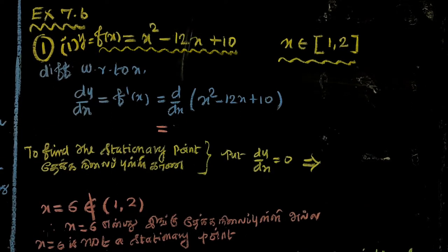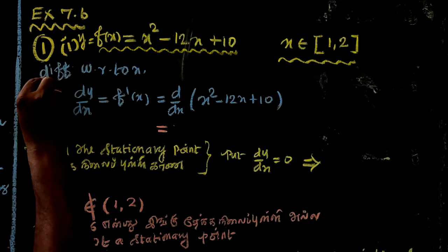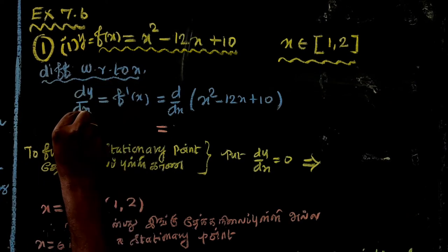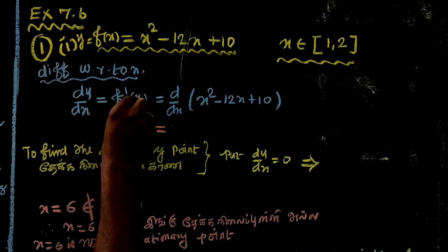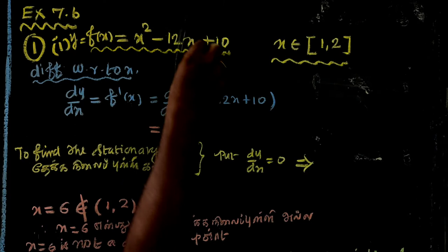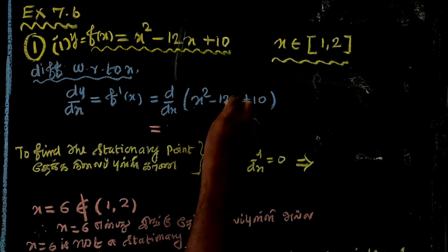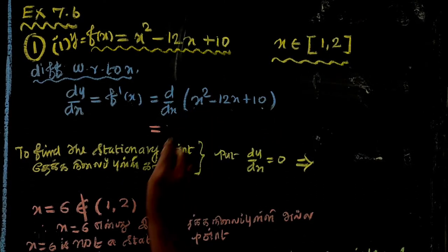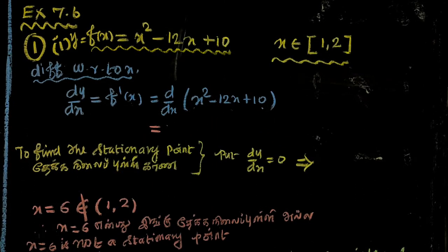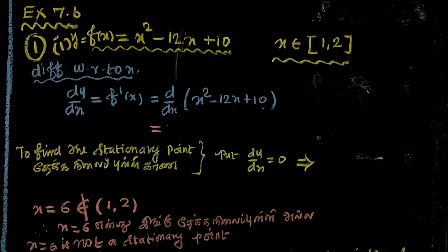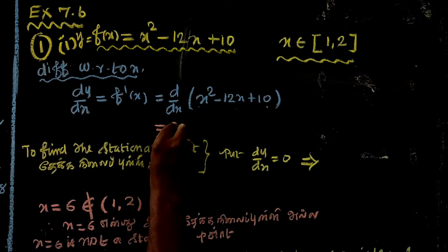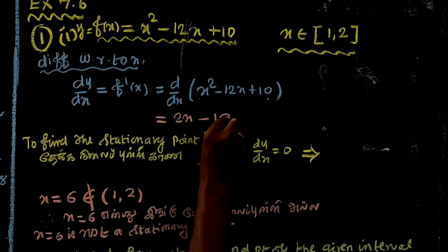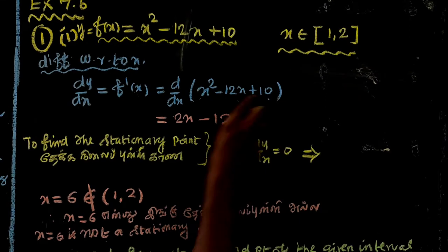dy by dx is equal to, differentiating with respect to x: f dash of x, d by dx of x squared minus 12x plus 10. x squared differentiates to 2x, minus 12x differentiates to minus 12, and the constant 10 goes to 0. So dy by dx equals 2x minus 12.